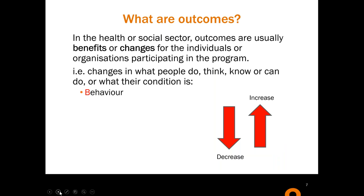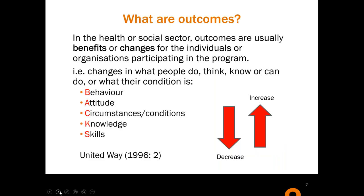I've done this work for 20 years in the social sector. I worked at United Way for a period of time, and this was actually one of the neatest descriptions of what an outcome is. It's described as a benefit or change for individuals or organisations participating in a programme — changes in what people are doing, thinking, knowing. The acronym BACS: Behaviour, Attitude, Condition, Circumstance, Knowledge and Skills. If you apply that as a test when you write an outcome down, you're on the right track.